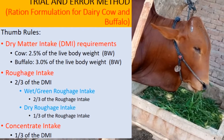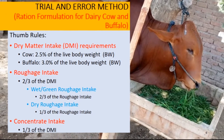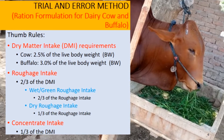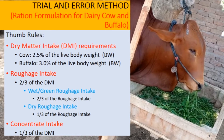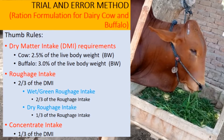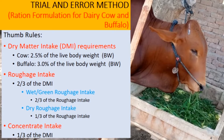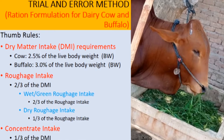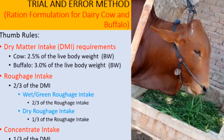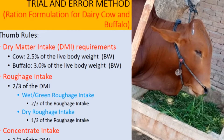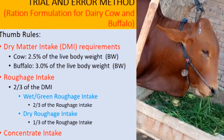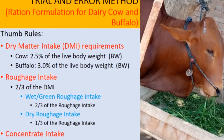By following the thumb rule, we calculate the total dry matter intake of an animal. The total dry matter intake is then divided into two components — roughages and concentrate fed separately. Roughages account for two-thirds of the total DMI and concentrate accounts for one-third of the total DMI.